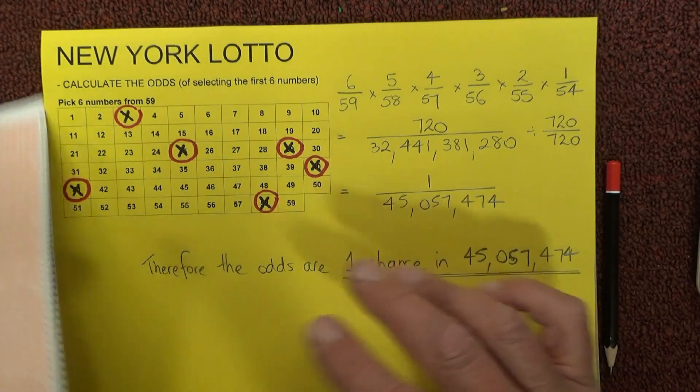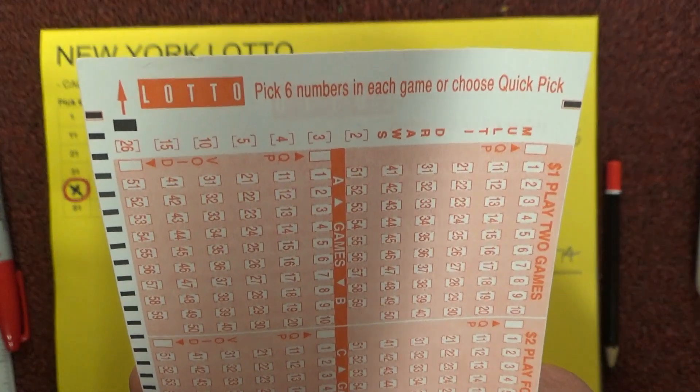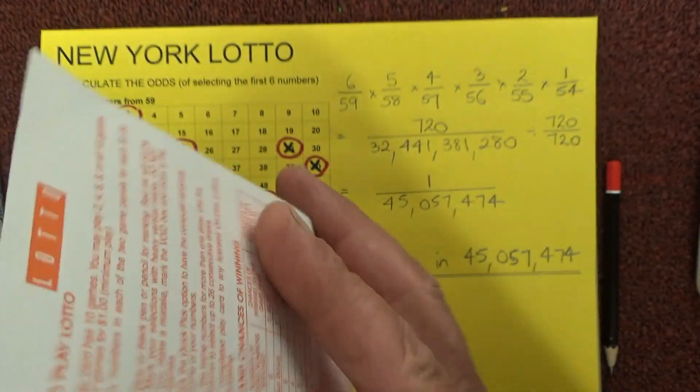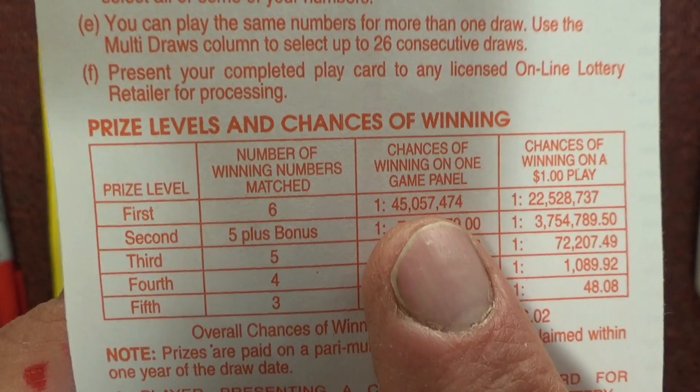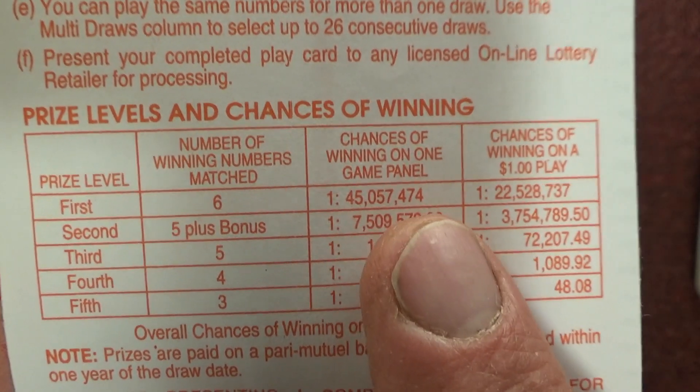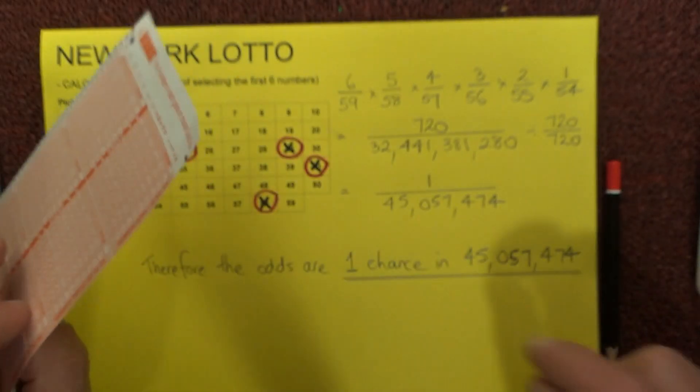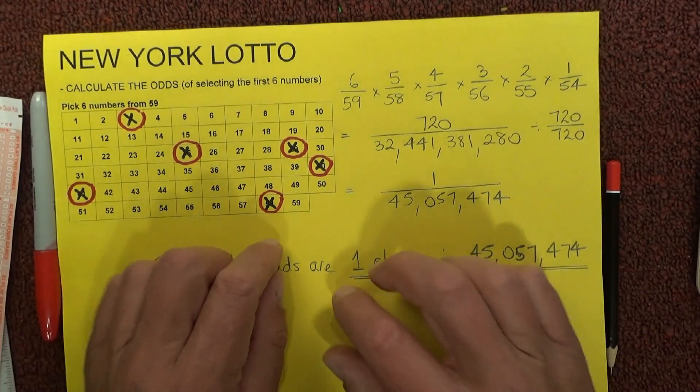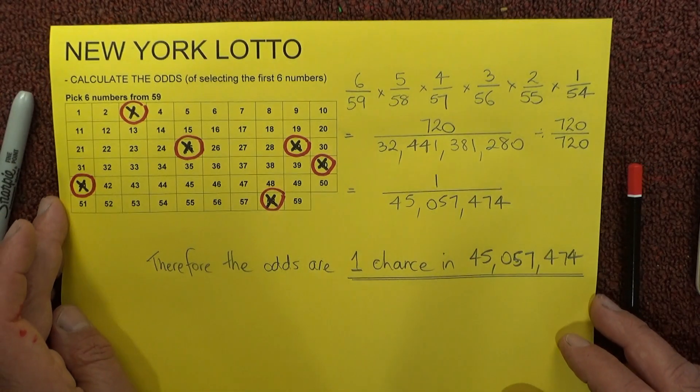To make sure, to double check and to show that my calculations are correct, I've got the New York Lotto coupon. On the back are the odds, and there we go: first prize, matching six numbers, chance of winning in one game panel, one chance in 45 million, 57,474. You can see there that my calculations are correct. Okay, well I hope you've enjoyed the video. Thanks for watching, and goodbye for now.